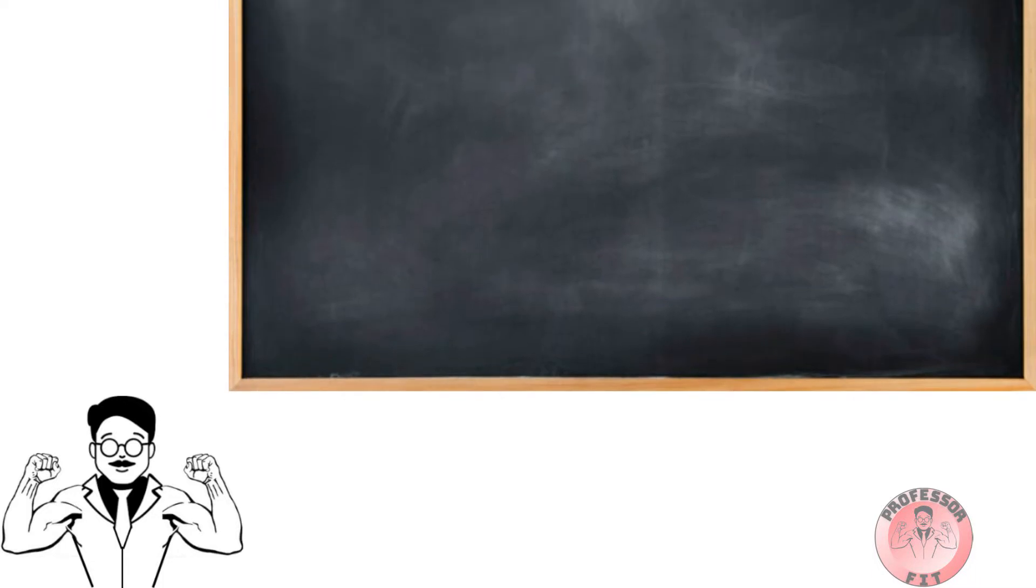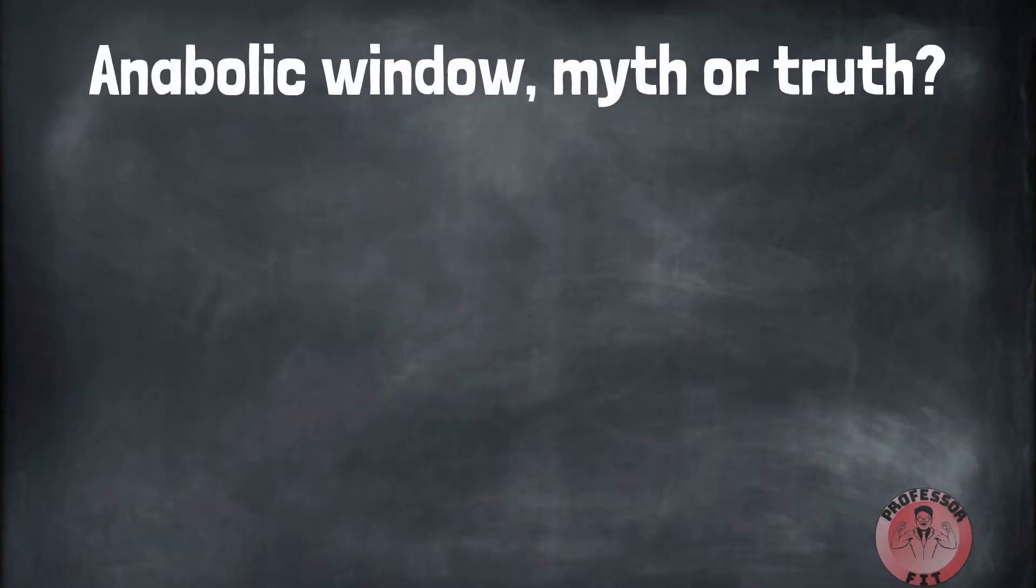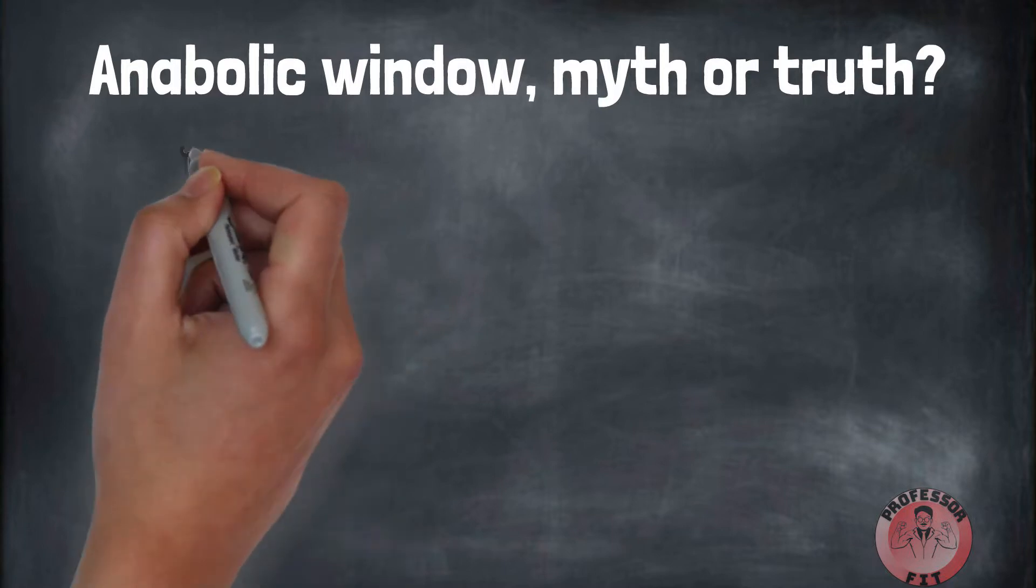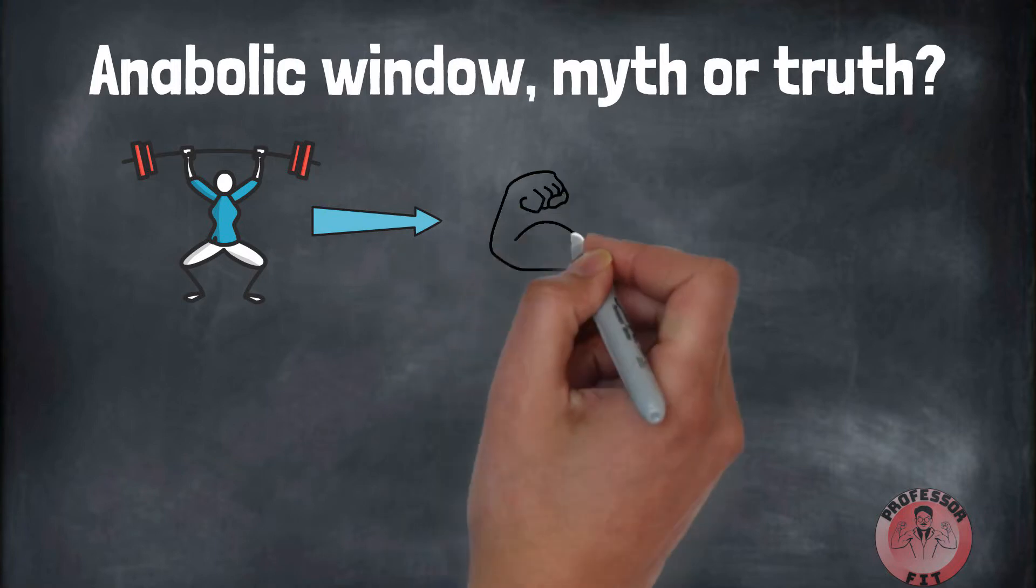Welcome all to a brand new episode of Professor Fit. Today we will discuss the anabolic window. Is it really true or is it just another myth? If you're trying to build muscle, strength training is the best way to do it. Strength training damages the muscles, which causes them to repair and grow. The result is bigger, stronger muscles.